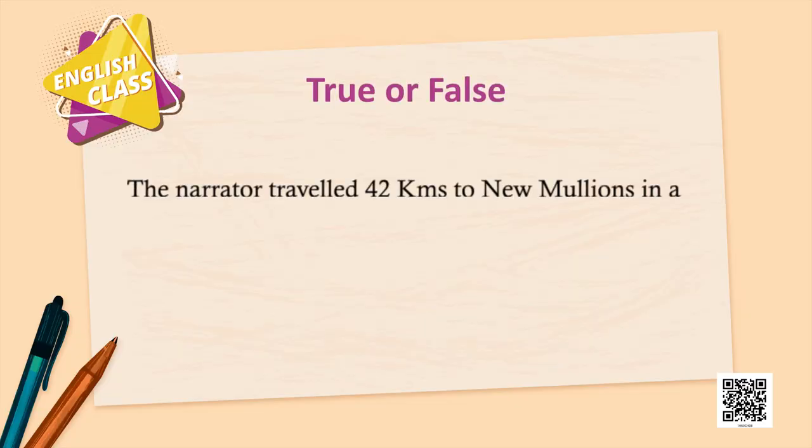First: the narrator travelled 42 kilometres to New Mullions in a train. What do you think, Suhani — true or false? It is true. No — this is the twist. It is true that he went to New Mullions in a train, but he travelled only 40 miles. You have to pay attention to all the details.